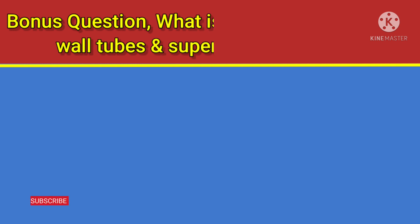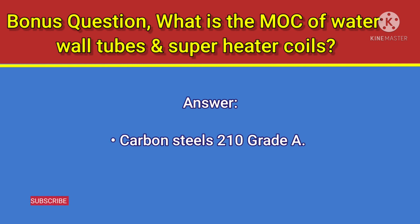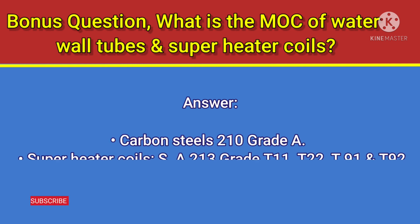Bonus question: What is the MOC of water wall tubes and superheater coils? Answer: Water wall tubes — carbon steel SA-210 grade A. Superheater coils — SA-213 grade T11, T22, T91, and T92.